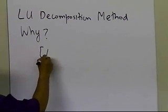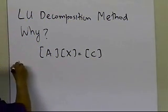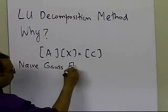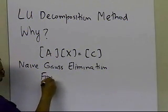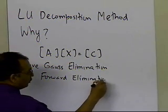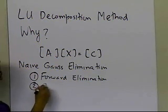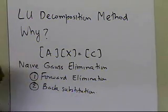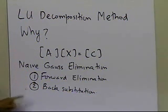For example, when you have A times x equal to c given to you, if you are doing Naive Gaussian elimination, what you will be doing is forward elimination. There will be two steps which you will be conducting in order to do the Naive Gaussian method: you will do forward elimination, and then you will do back substitution. That's where the computational time will be spent in order to solve this set of equations.